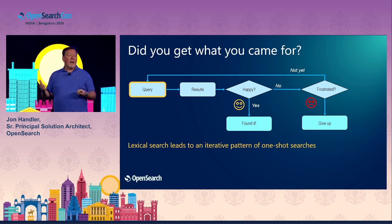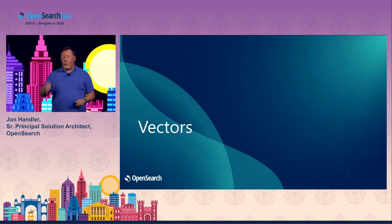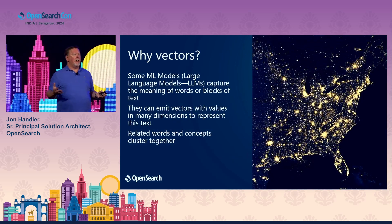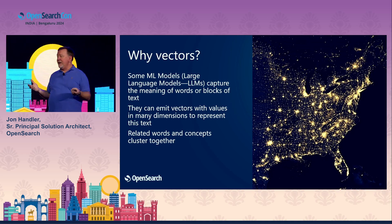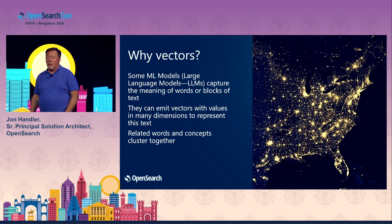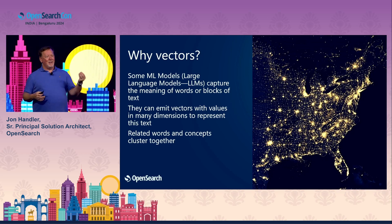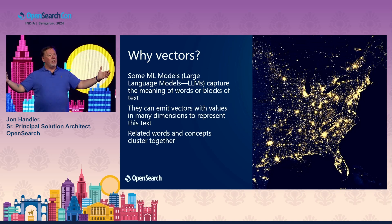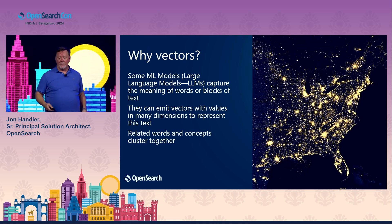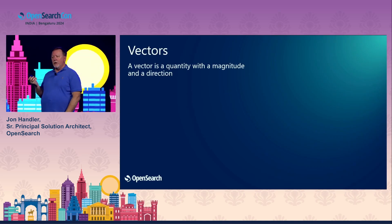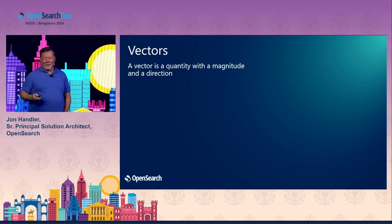Now we're going to move into what happens with vectors — how they work and how they improve this scenario. What are vectors? Large language models take in pieces of text and emit multidimensional vectors that capture the meaning behind that text. A vector is a quantity with a magnitude and a direction. In two dimensions, you can represent a vector on a Cartesian axis — for example, x equals four and y equals six.